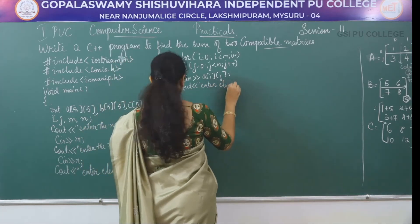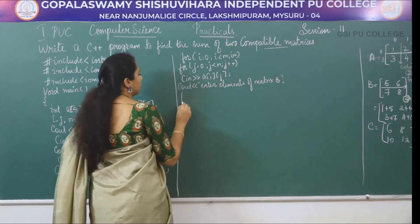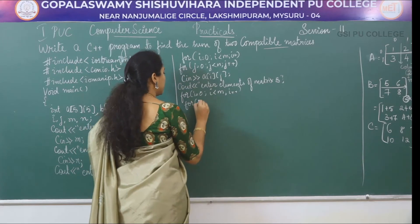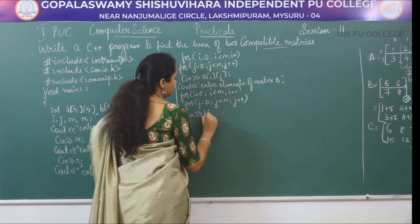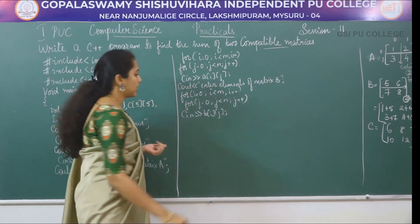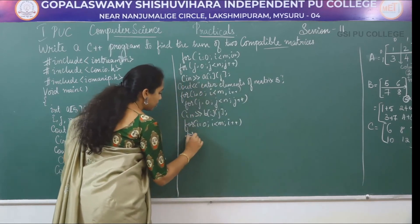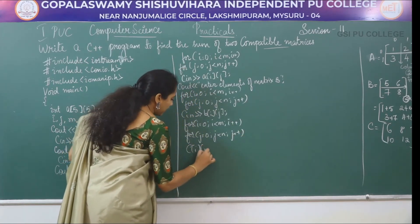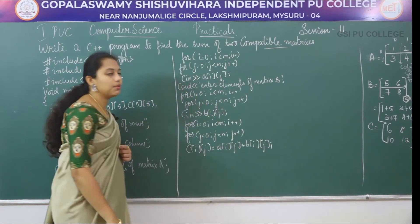Next we accept the elements of matrix B. Using the same nested for loop structure — for i=0; i<m; i++ and for j=0; j<n; j++ — we read B[i][j] with cin. After accepting elements of both matrices, we perform addition: for i=0; i<m; i++, for j=0; j<n; j++, C[i][j] = A[i][j] + B[i][j].